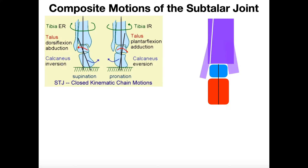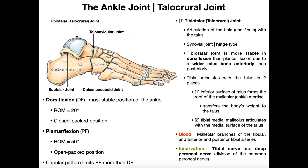The subtalar joint is a joint that is composed of the talus proximally and the calcaneus distally. If we look at this bone right here, this is the talus. Beneath it, distally, is the calcaneus, and this joint that lies between the talus and the calcaneus is the subtalar joint.